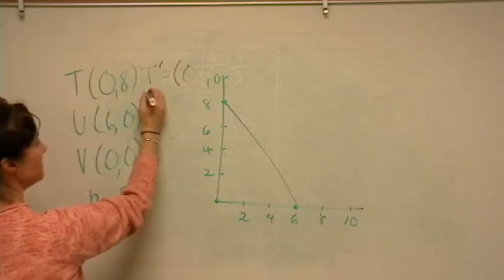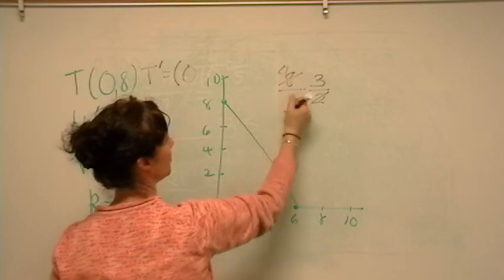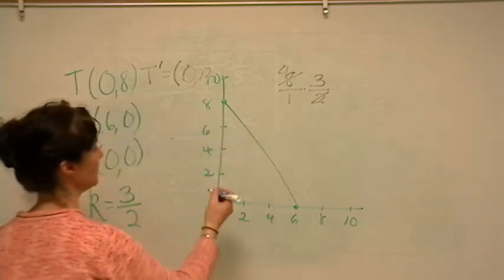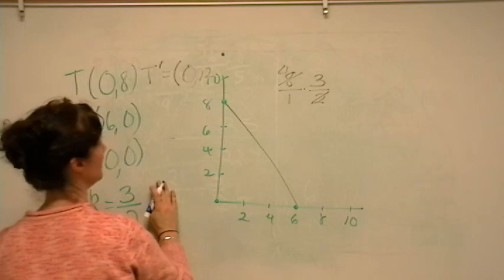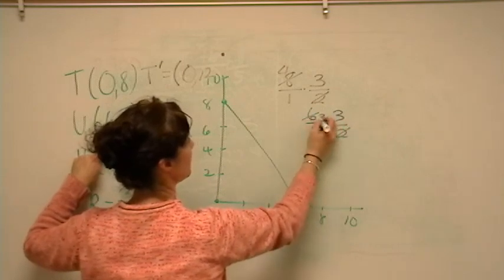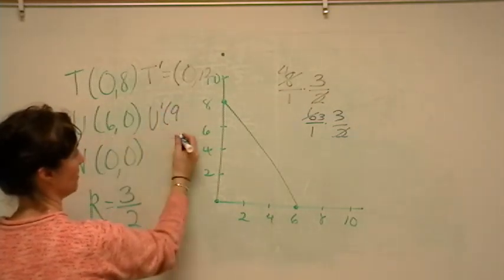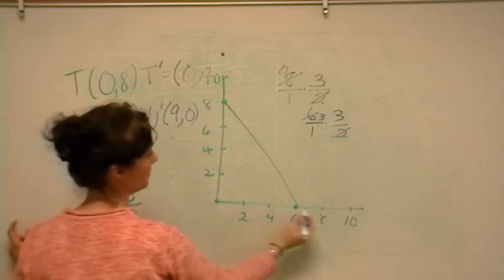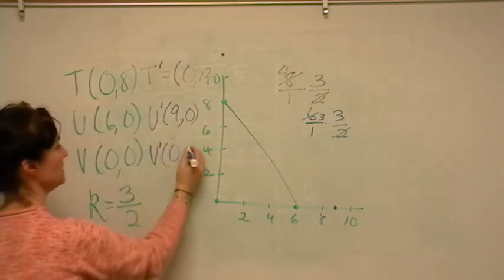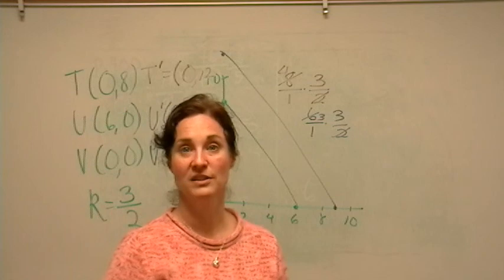Well, you probably can't even see that. Okay, 8 times 3 halves. We get 4 times 3 is 12. So we have 0, 12. And you can't really see that, so let me try this in blue. 0, 12. Okay, then 6, 0. 6 times 3 halves. This is going to cancel, and we get 3 times 3 is 9. So U prime is 9, and then 3 halves times 0 is 0. So we're going to have 9, 0. 9, 0. And then 0 times 3 halves. 0 times 3 halves. V prime is going to be 0, 0. So our dilated figure is going to be larger in the same spot.